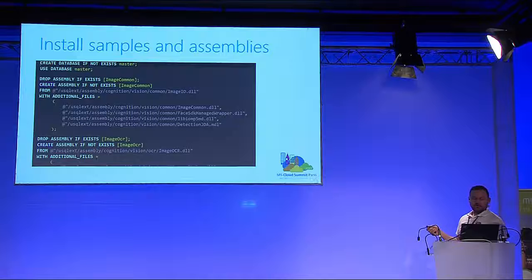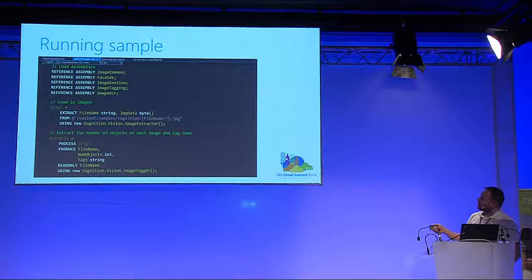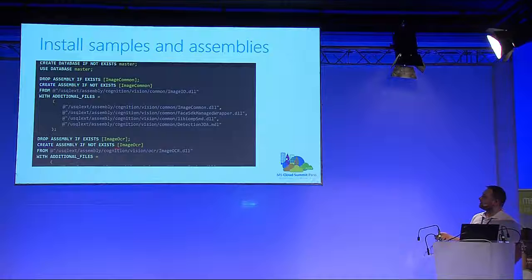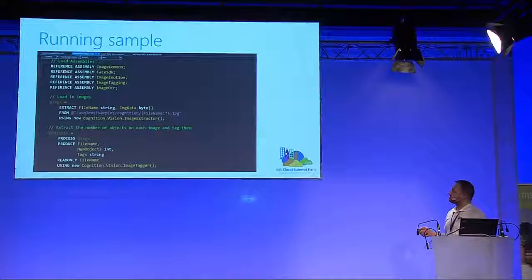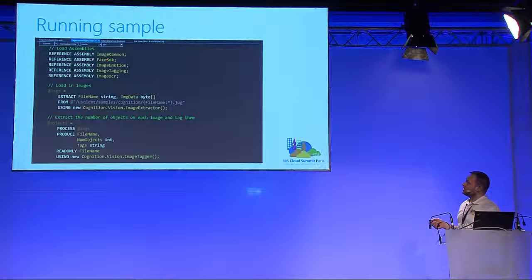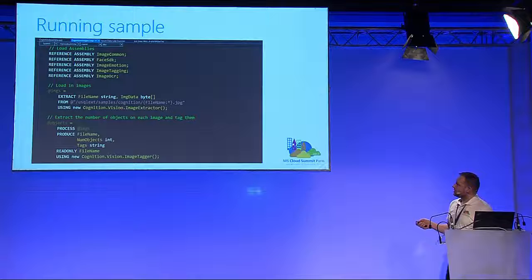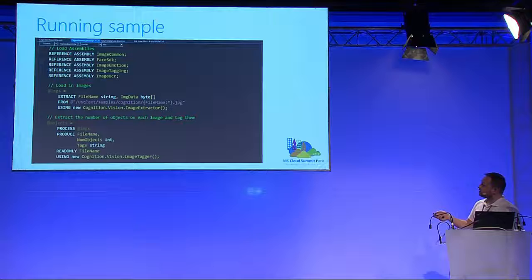One mistake I made initially was jumping in and executing the scripts for cognitive services and getting an error, because you need to register all the assemblies beforehand. You can register the cognitive assembly, the Python assembly, or the R assembly — or you can register all in one U-SQL script that you open in Visual Studio or PowerShell and execute in your analytics account. This example shows how you reference the assemblies: image common, the face SDK, image emotion, image tagging, and OCR. I have 26 images in my Data Lake Store with people in them.